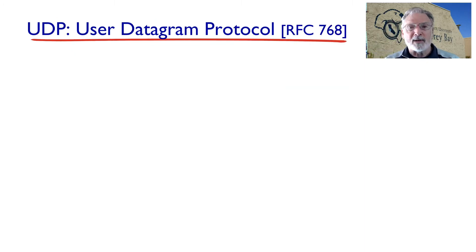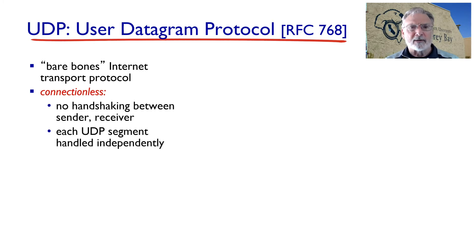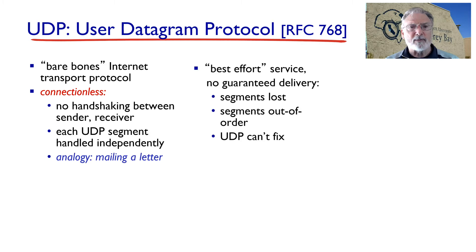Let's look at UDP versus TCP. UDP is a bare-bones protocol. It provides a connectionless service with no handshaking to set up the conversation. It is analogous to sending a letter. Each UDP segment is handled independently. If the segments are lost or received out of order, UDP itself cannot fix it. As a consequence, UDP does not guarantee delivery. In other words, the sender just casts the application layer data at the receiver and hopes the receiver gets it.